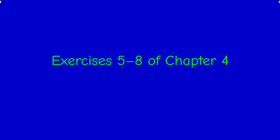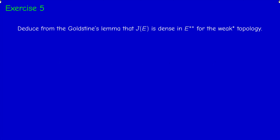Welcome back. In this video, I'm going to solve exercises 5 to 8 of chapter 4. In exercise 5, we have to deduce from the Goldstein Lemma the fact that J of E is dense in the bidual of E for the weak-star topology, where J is the canonical injection from E to the bidual of E. E is here a normed space.